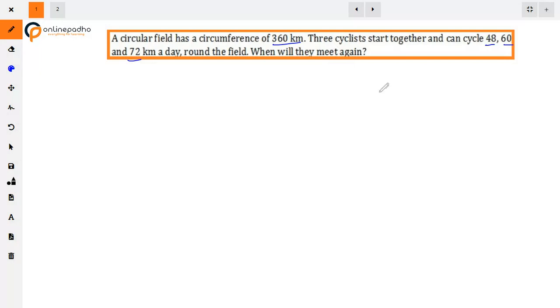What do we have in the question? A circular field has a circumference of 360 km, and three cyclists cover different distances in one day. The first cyclist cycles 48 km, second 60 km, and third 72 km in one day. When will they meet again?